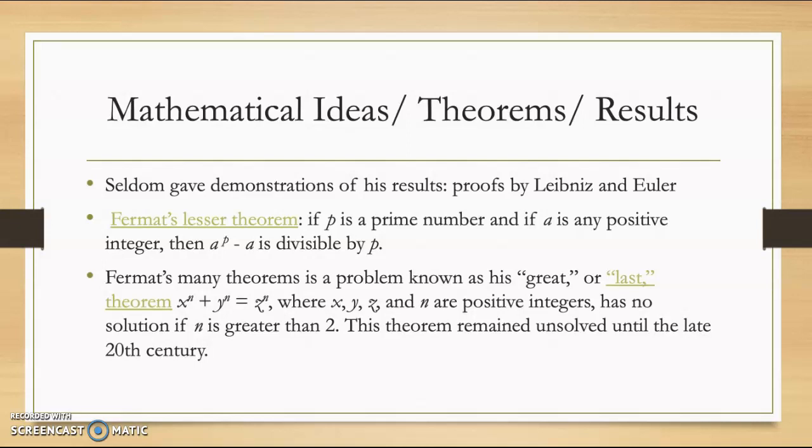And then his greater last theorem is x to the n plus y to the n equals z to the n, where x, y, z, and n are all positive integers. And there is no solution if n is any greater than 2. And he never showed that this was solved. He just said that this was one of his theorems. And it was one that remained unsolved for a while and it wasn't solved until the late 20th century.